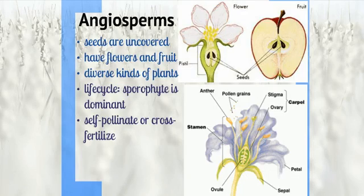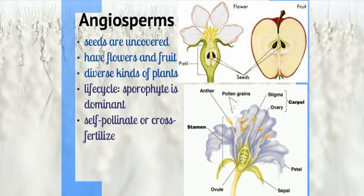Angiosperms have covered seeds and have flowers and can also have fruit. This is the most diverse group of plants. In its life cycle, the sporophyte is the dominant stage. Flowers have male and female parts, and angiosperms can self-pollinate, so the pollen falls on the stigma of the same flower, or they can cross-fertilize with other plants.